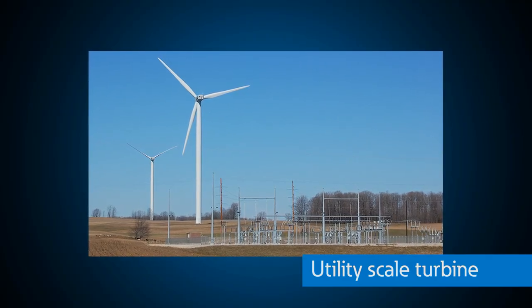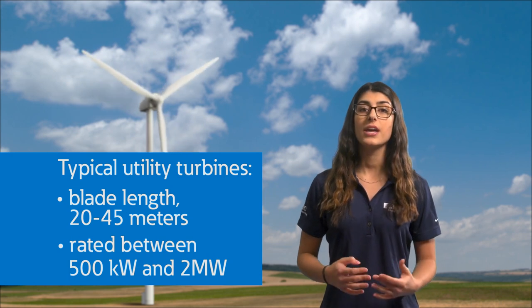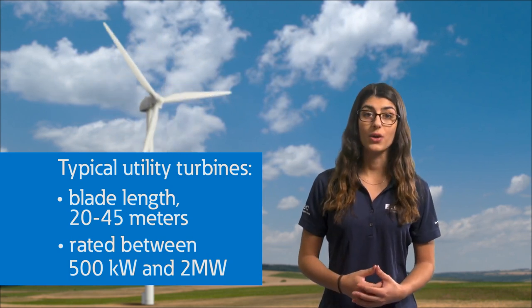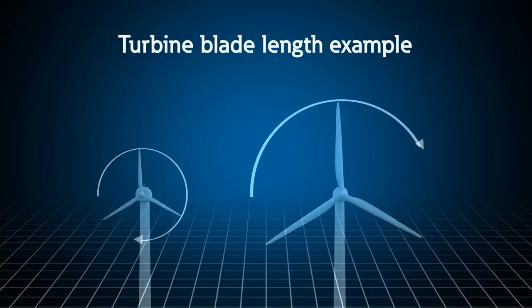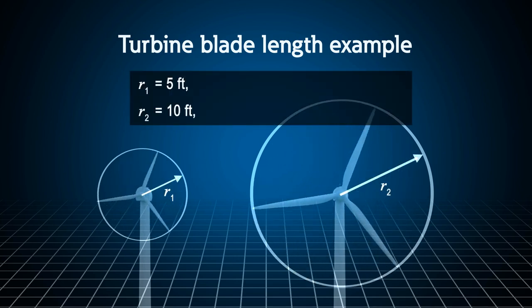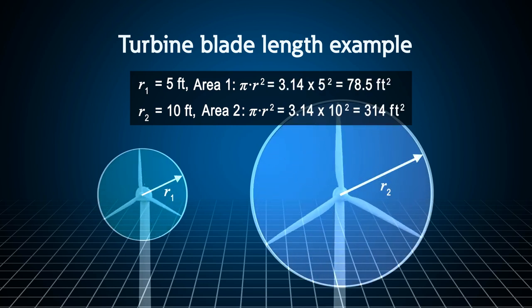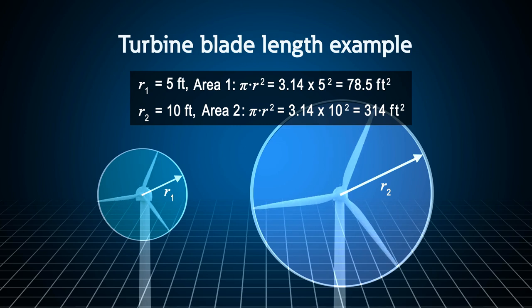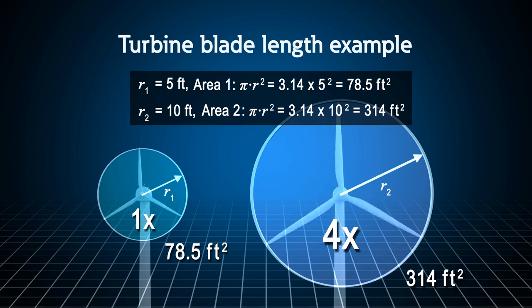Utility-scale wind turbines are a lot bigger than the ones you might see in a school yard or behind someone's house. Typical modern wind turbines have blade lengths of 20 to 45 meters and are rated between 500 kilowatts and 2 megawatts. If you double the blade length on a horizontal axis wind turbine, you get an area which is 4 times larger and generates 4 times as much power. For example, comparing a 5-foot blade radius to a 10-foot blade radius, using the area of a circle formula (area = π r²), you get 78.5 square feet versus 314 square feet respectively — 4 times as much power output from the rotor.